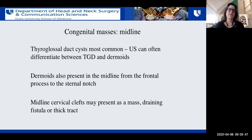Dermoids are also present in the midline, frequently seen more in the nasal area, but can present anywhere from the frontal process down to the sternal notch. They can be confused with thyroglossal duct cysts when they're in the superior neck at the level of the thyroid cartilage or hyoid bone. Sometimes they're a little more rubbery to touch but can be difficult to differentiate. On ultrasound, dermoids tend to be a little more solid. During surgery, you won't necessarily see any kind of tract — they tend to just be under the subcutaneous tissue and end there, unlike thyroglossal duct cysts, where you frequently will see a tract at least to the hyoid.